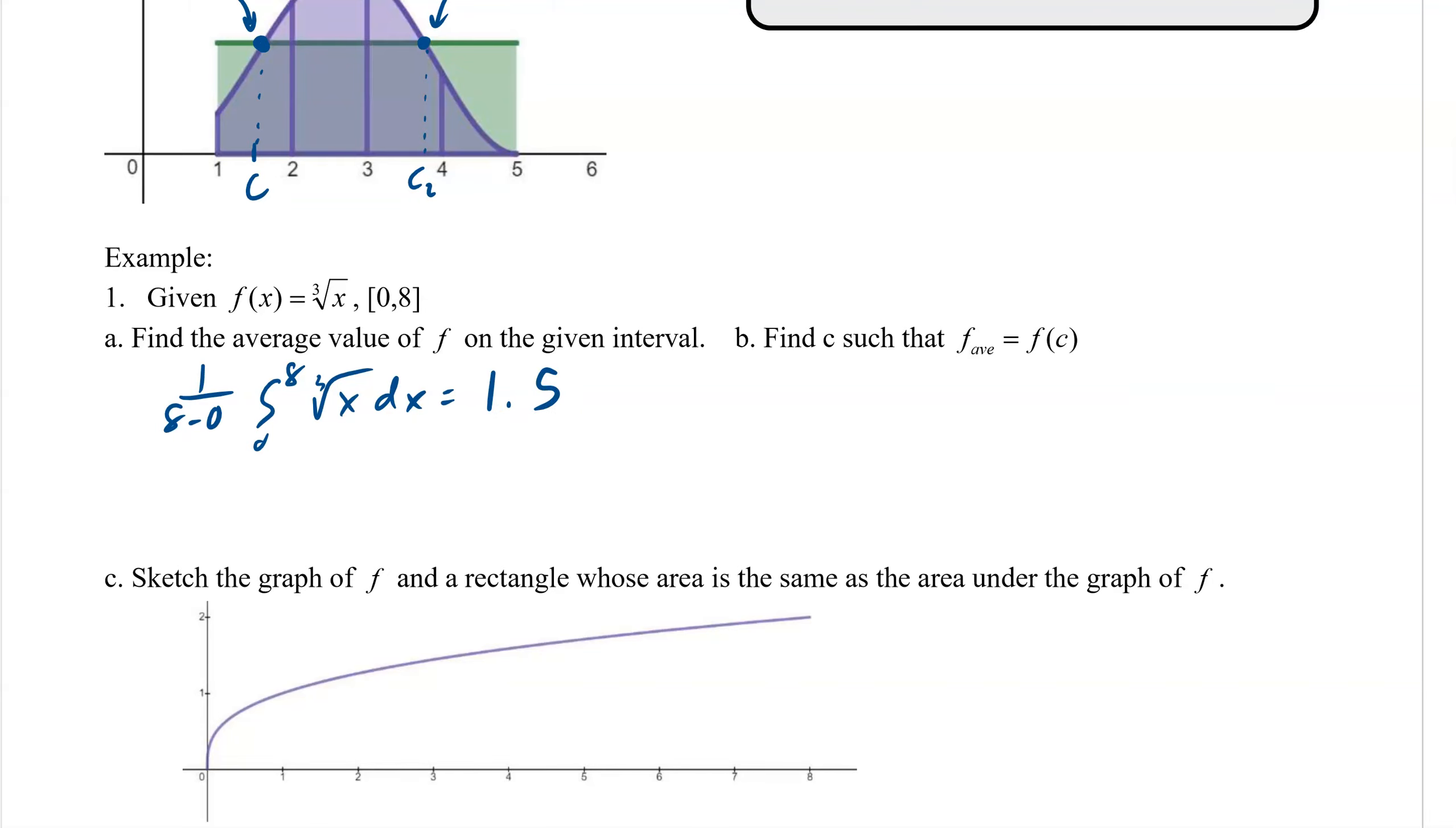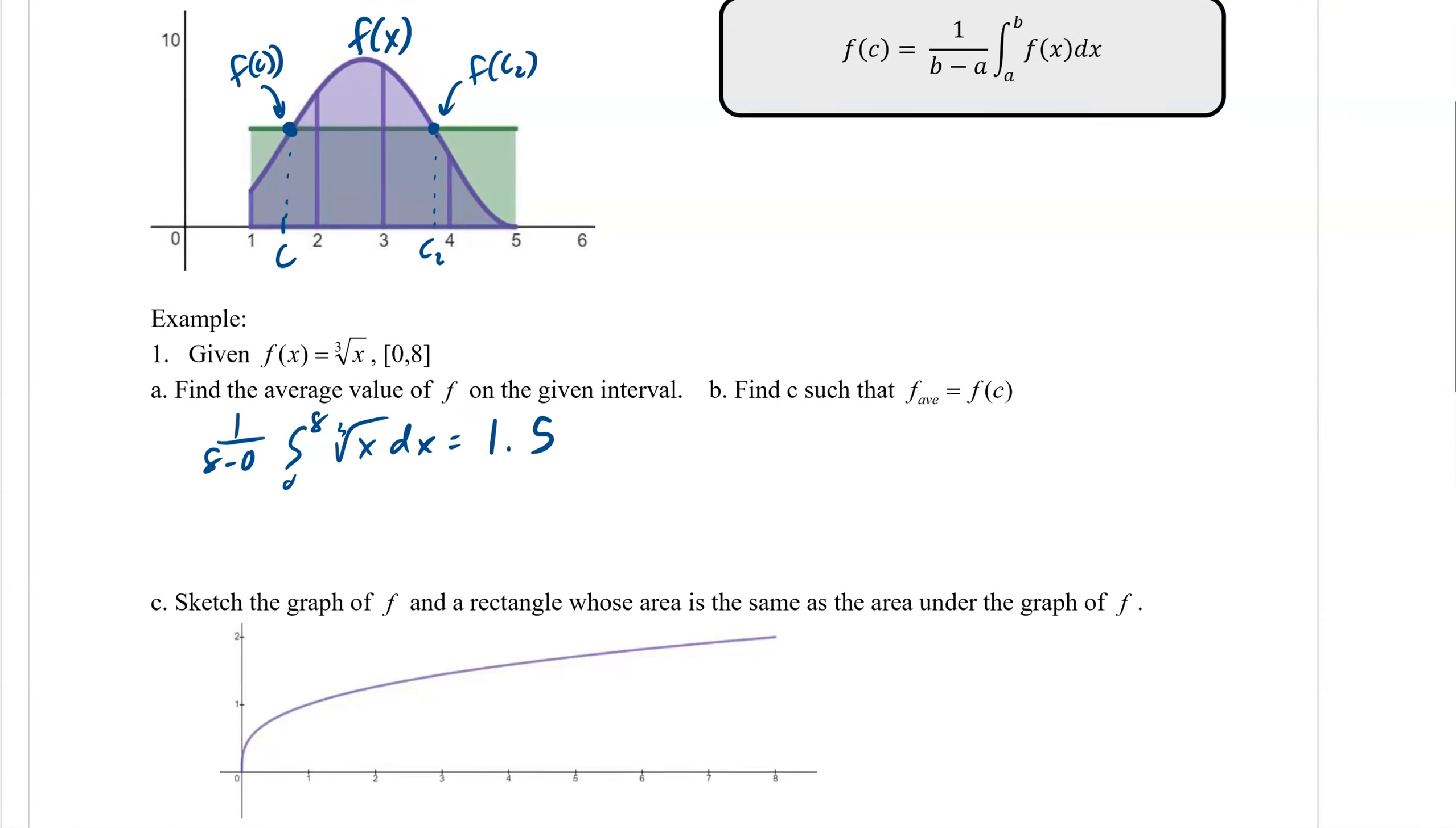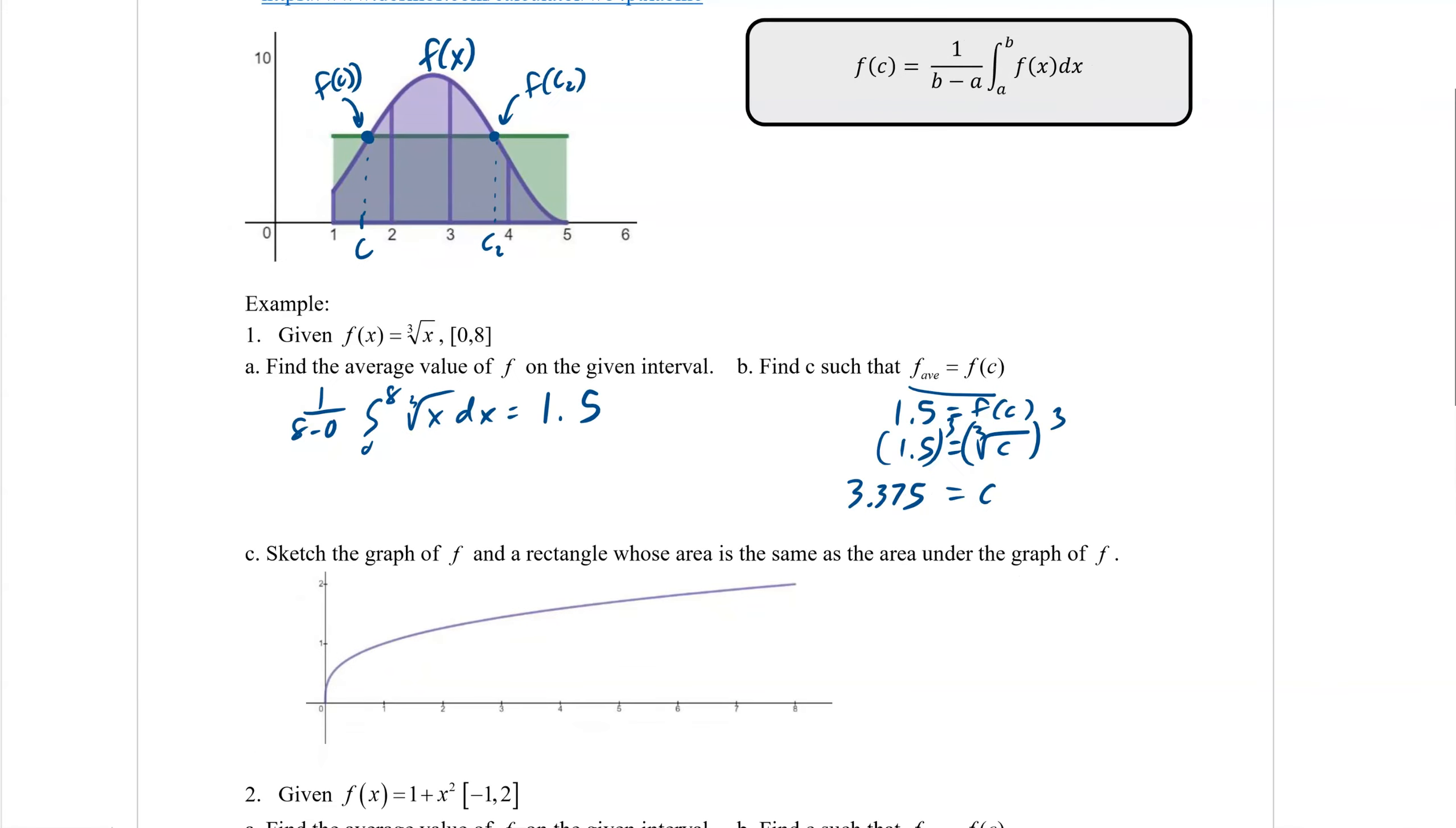Now we need to find some value of c that if we plug it into the function, it gives us the average. Our average here is 1.5, 1.5 per unit, and our c here is what we're looking for. If I plug c into our function, we get the cube root of c equals 1.5. Now it gives us an equation that we can find that c value that we need. If we cube 1.5, we get 3.375.